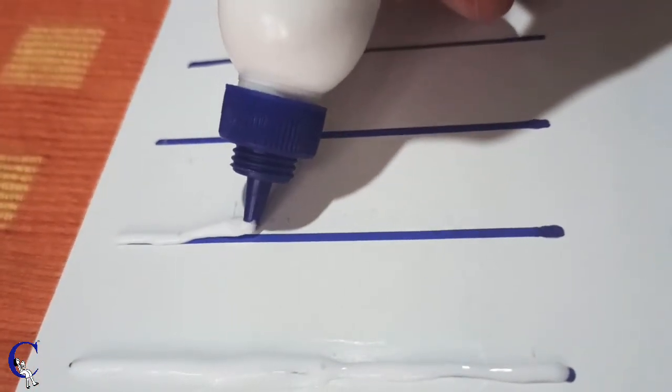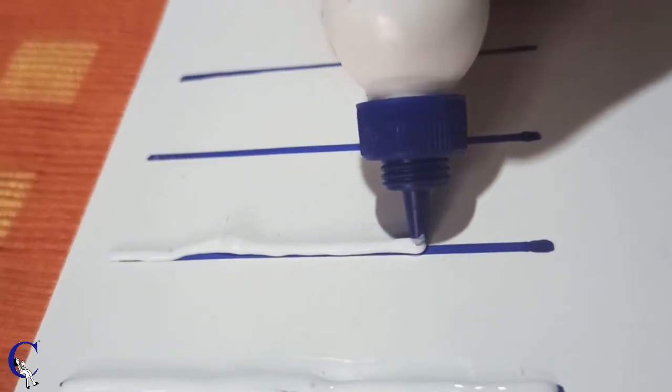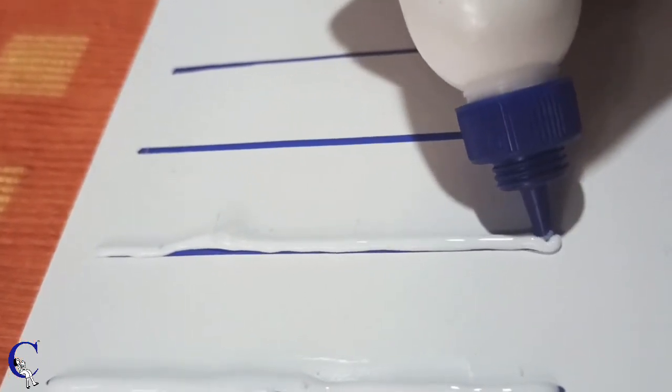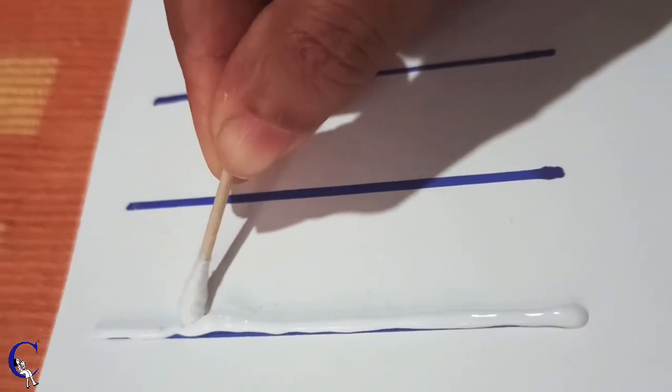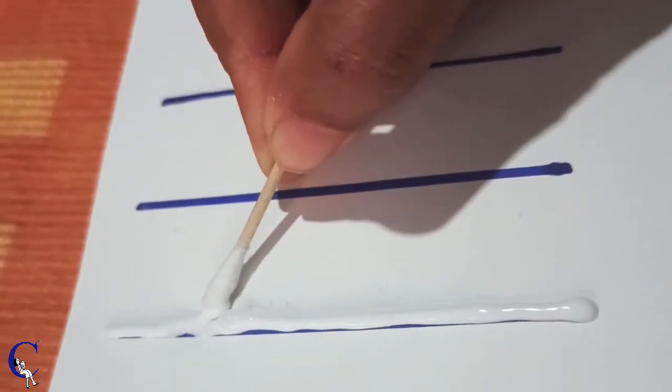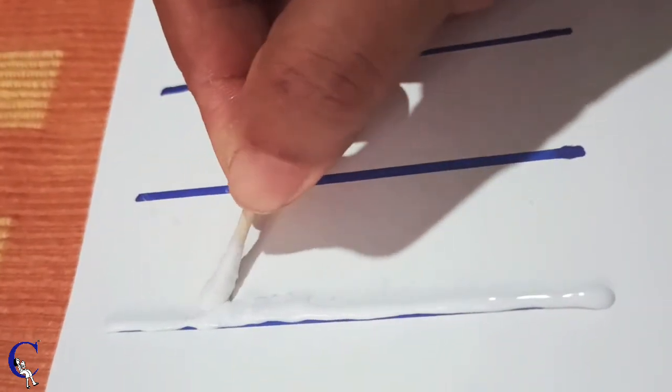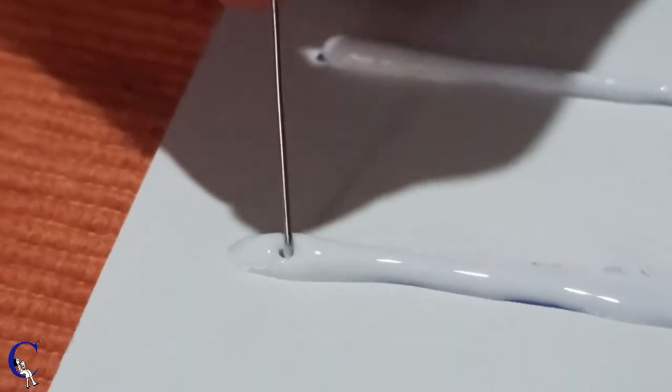What you can do is continue your line and later take a matchstick or an earbud. In this video I'm using an earbud and slowly begin to push the glue back into its line. You can smoothen out the edges with the earbud as well. You might find a few air bubbles that form. All you have to do is take a pin and pop it.